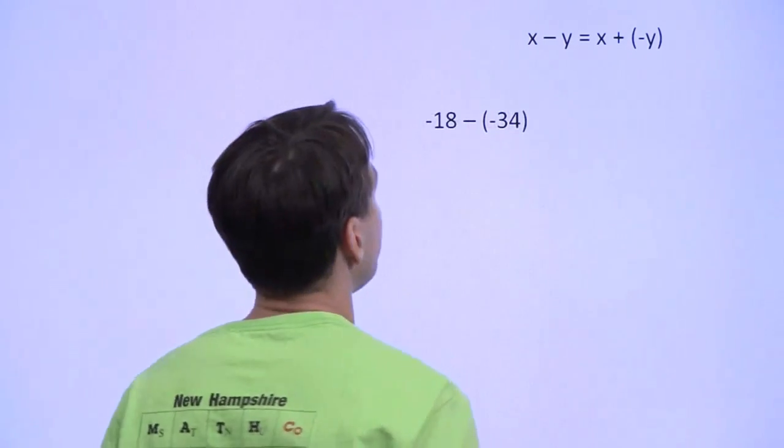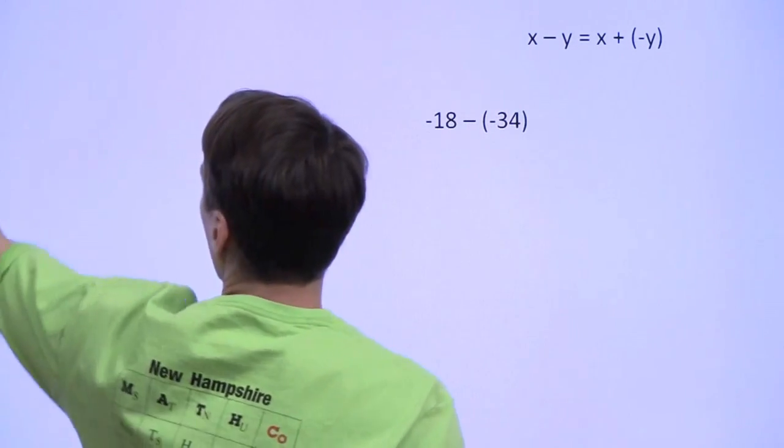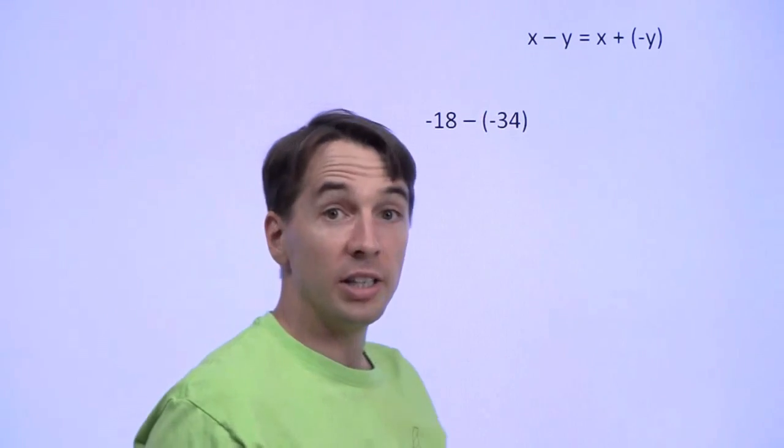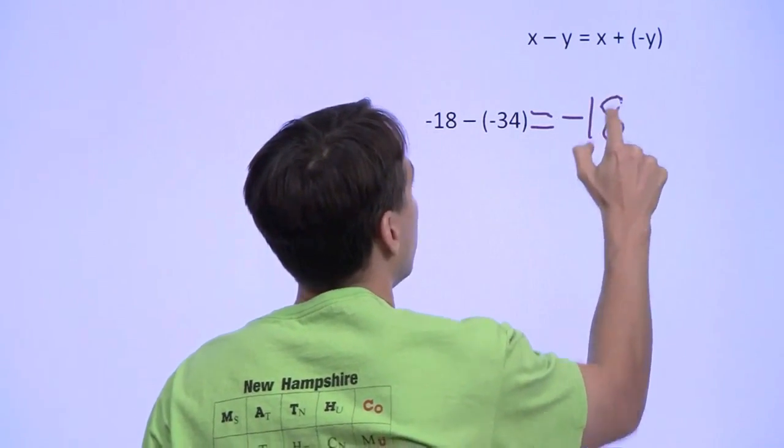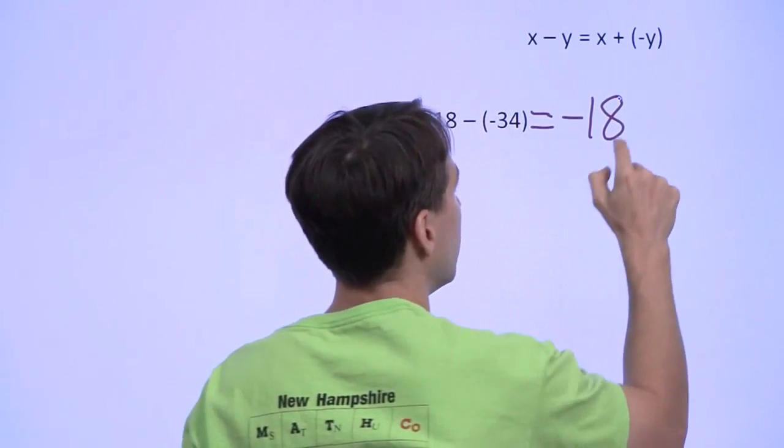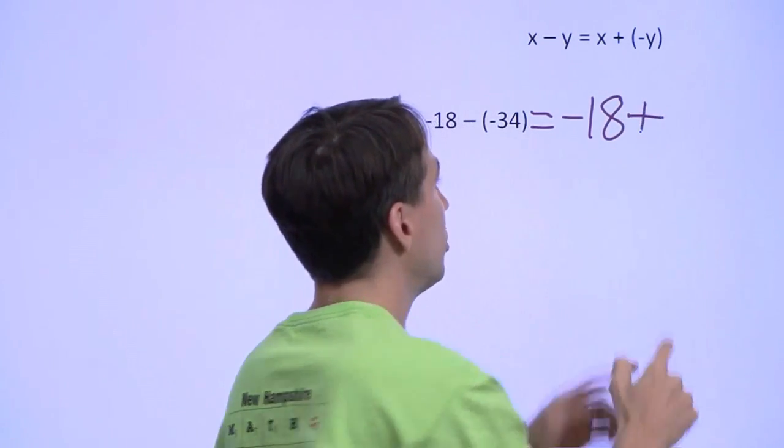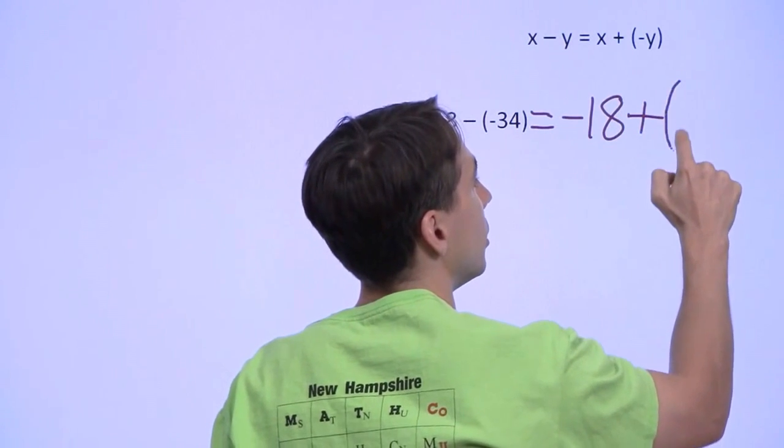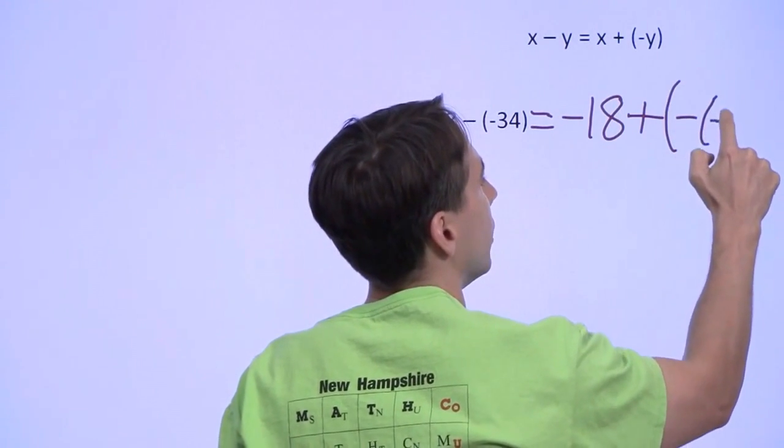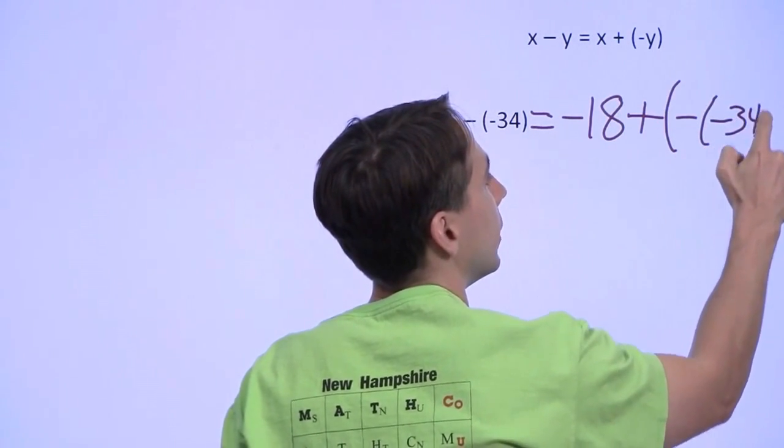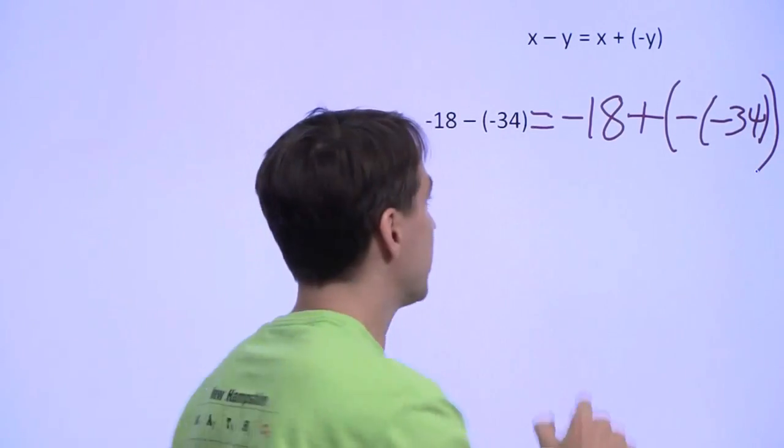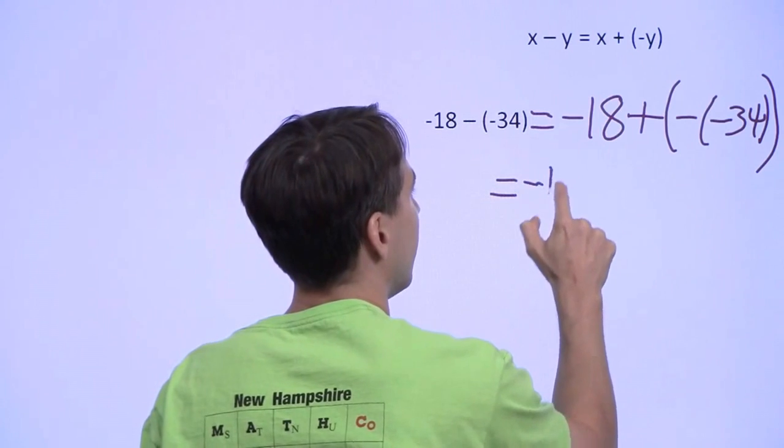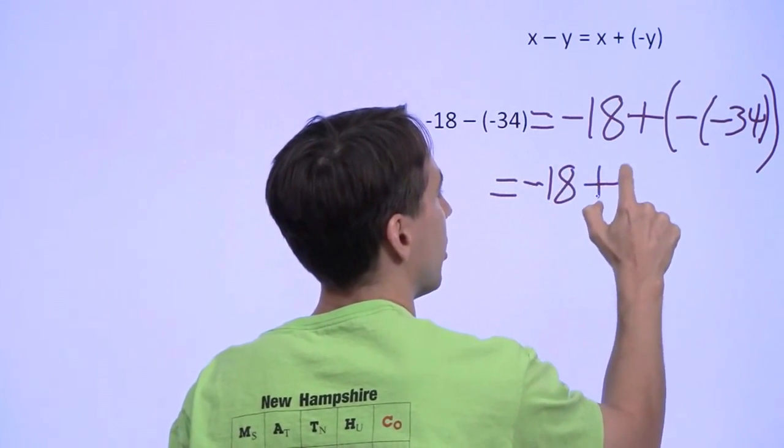On to the last problem. Once again, we'll use our definition of subtraction. Negative 18 minus negative 34—we still have our negative 18. We turn this into the addition of the negation of negative 34. Once again, negative of a negative is a positive.